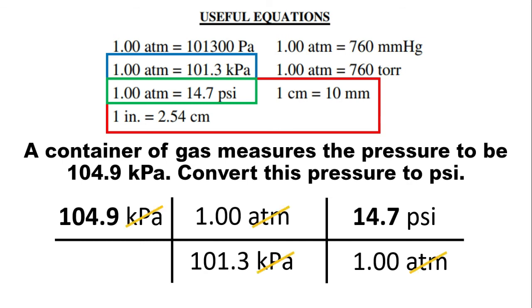Cancel the units, and divide, then multiply. So the final answer should be 15.22 psi. And we have 4 significant figures. So the final answer is the same. Okay? Okay. Let's go.